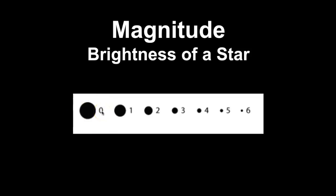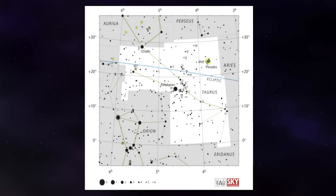The size of the dots on a star map correlates with brightness, or magnitude. The bigger the dot, the brighter the star — but the number assigned is a little backwards; brighter stars have a lower number. Some star maps also include Greek letters next to stars, known as the Bayer designation, which assigns a Greek letter to each star within a constellation, usually in order of apparent brightness. The brightest star is alpha, the second brightest is beta, and so on. For example, the alpha star of Taurus has the Bayer designation alpha Tauri, while its common name is Aldebaran.